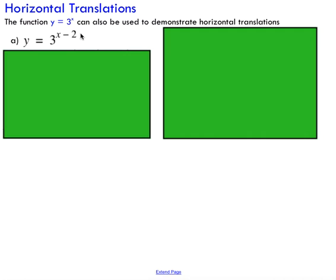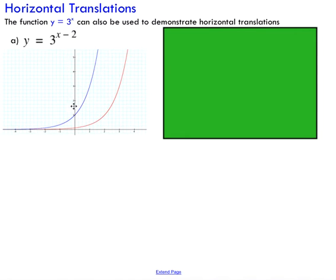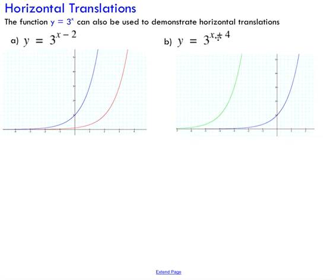Thinking back to horizontal translations — if we add or subtract a number after the x, it's a bit like a bizarro world. You might think a negative means moving left, but in this case we're actually shifting to the right by 2. You can see on the graphing calculator that instead of passing through (0, 1), we're now passing through (2, 1). Similarly, if you add a number after x, you move to the left by that number of units — so instead of passing through (0, 1), we pass through (negative 4, 1).